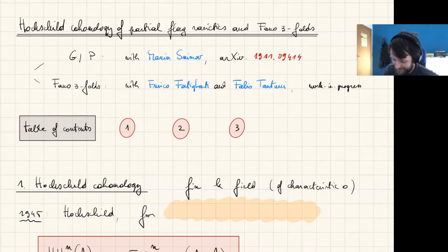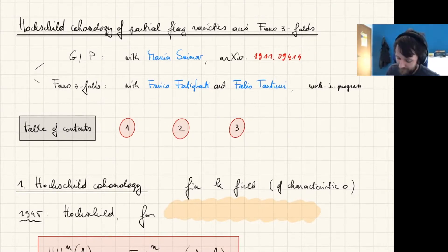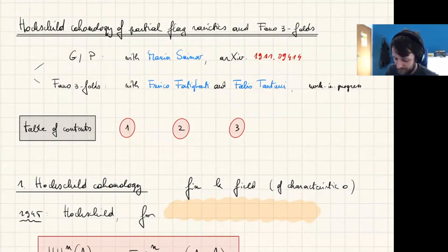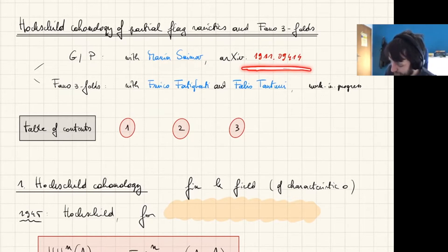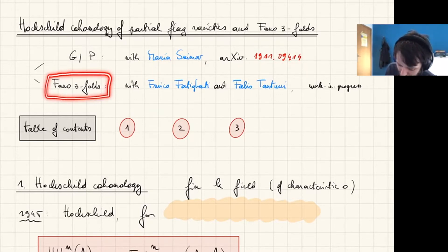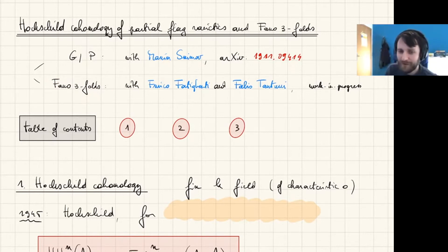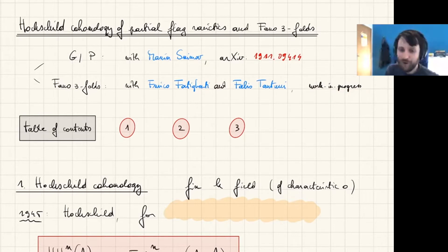Thank you very much for the invitation. Today I want to talk about Hochschild cohomology for two types of varieties. For partial flag varieties — G mod P is my notation for a partial flag variety — this is joint work with Maxim Smirnov and is available on the archive. For Fano triples, this is joint work with Enrico Fatigenti and Fabio Tanturi, and this is work in progress.